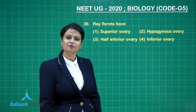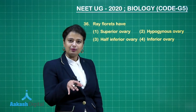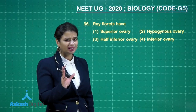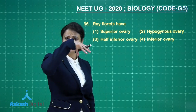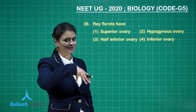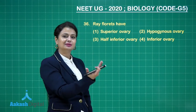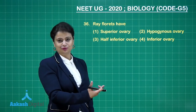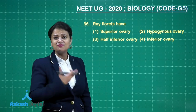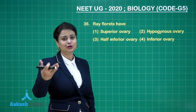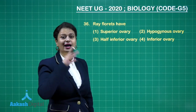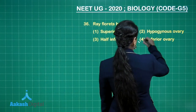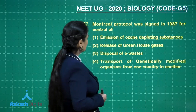Another question from morphology: ray florets are present in the inflorescence of sunflower. There are two types of florets — disc florets present in the center, and ray florets present at the periphery. Ray florets have an inferior ovary, and when a flower has an inferior ovary, we call such a flower an epigynous flower. So the right answer is option for ray florets.